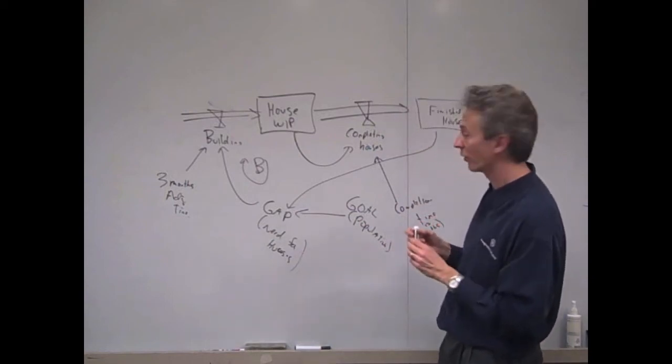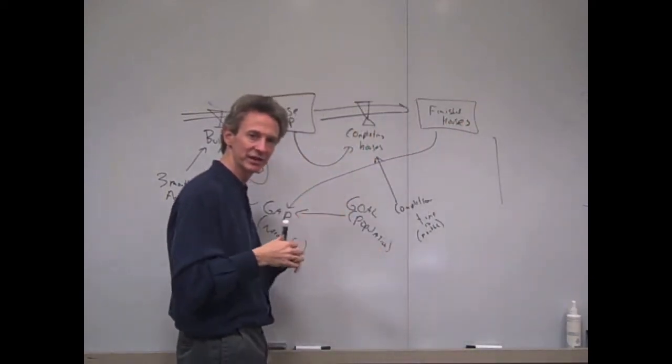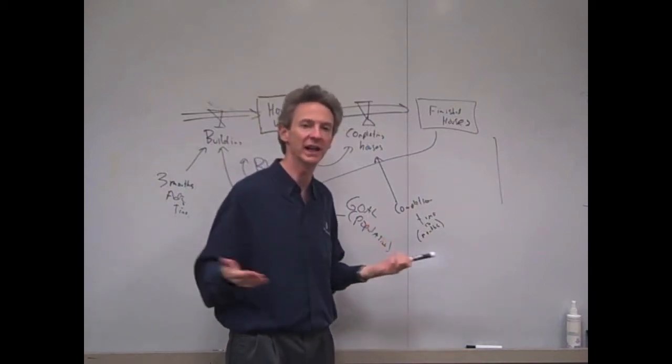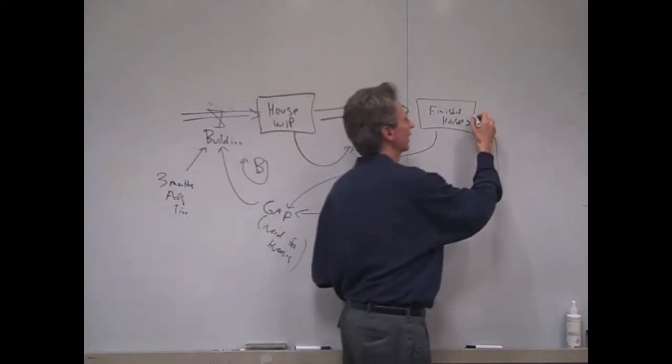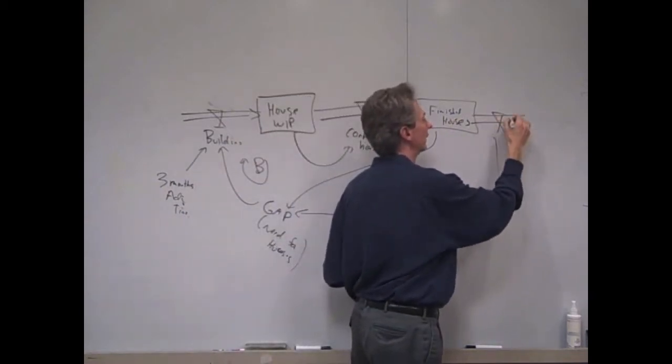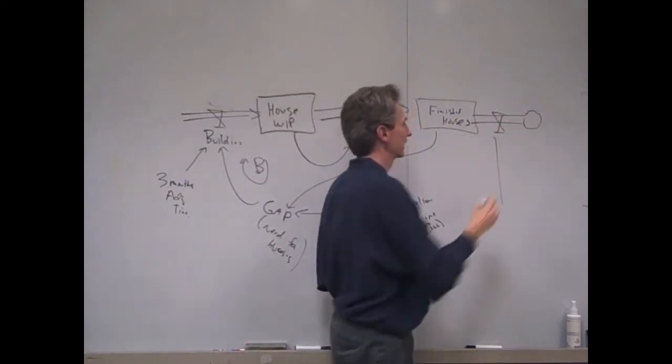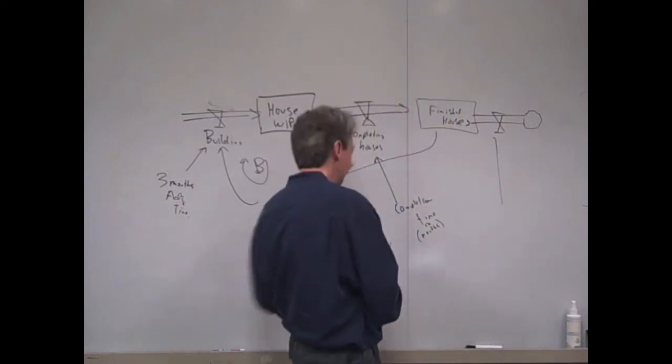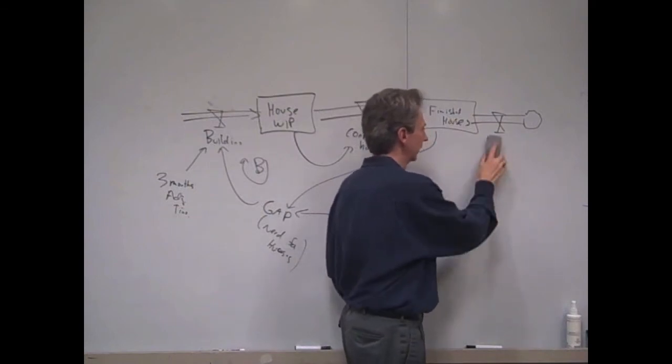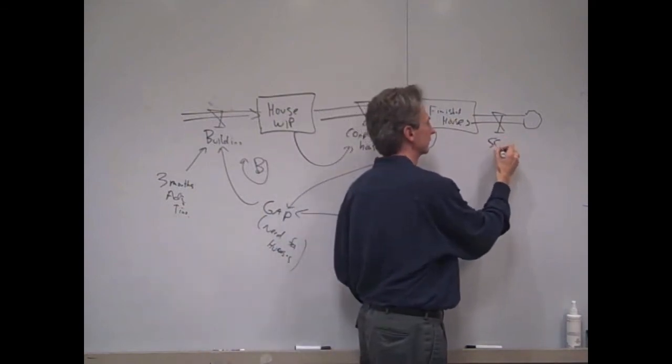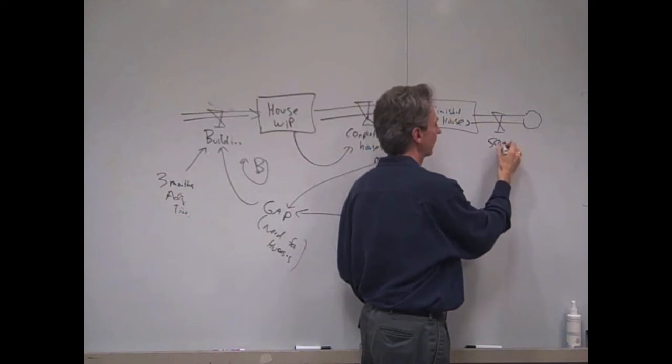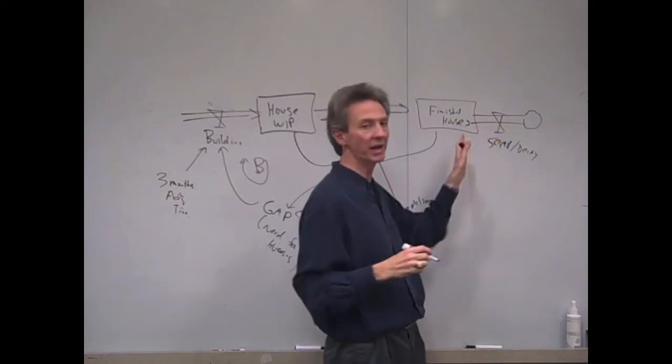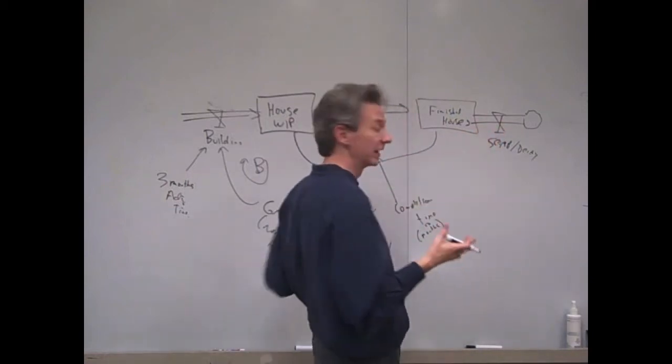And the last thing I added in the model, just to make things interesting, was a decay rate, basically, that houses would only last every three years. Essentially finished houses will decay, called scrap or decay, basically. So they cease to become houses, which creates a need again.